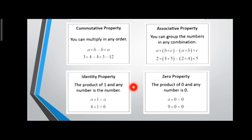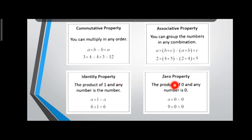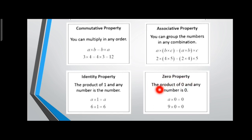The identity property states that when you multiply any number by 1, the result is the same number. For example, 100 × 1 = 100, and 5 × 1 = 5. The zero property states that when you multiply any number by zero, the result is always zero — for example, 100 × 0 = 0, 1000 × 0 = 0.